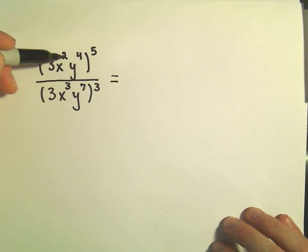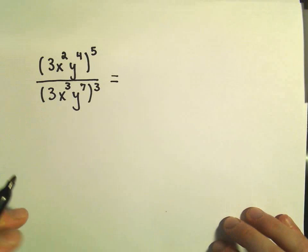So I've got my first example, 3x squared, y to the fourth, to the fifth, over 3x cubed, y to the seventh, to the third.